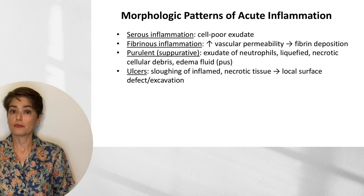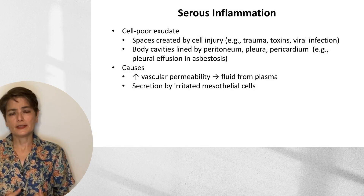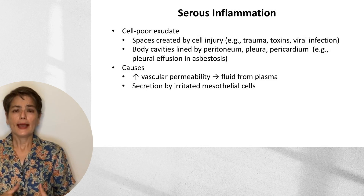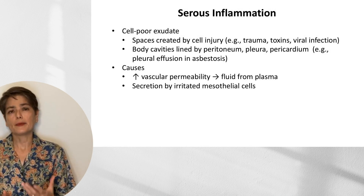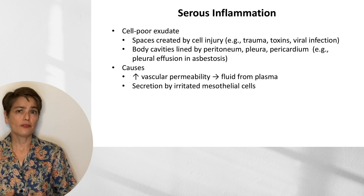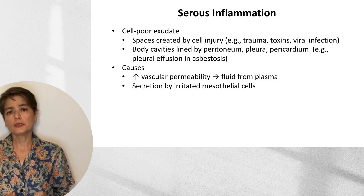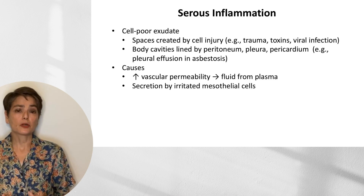Let's begin with serous inflammation. This is a cell-poor exudate, and we see it in two general contexts. One is in spaces created by cell injury, such as trauma in a friction blister, toxins, or a viral infection such as herpes virus. We can also see this in body cavities lined by peritoneum, pleura, and pericardium — an example being a pleural effusion in a case of asbestosis.